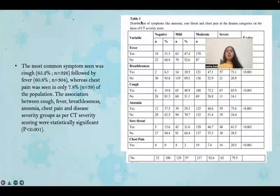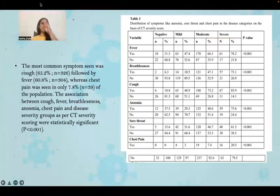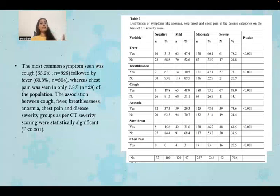Table three shows distribution of symptoms such as anosmia, sore throat, and chest pain across disease categories based on CT severity score. The most common symptom was cough, seen in 65.2% of patients, followed by fever, while chest pain was seen in only 7.8% of the population. The association between these symptoms and disease severity groups per CT severity scoring is statistically significant.